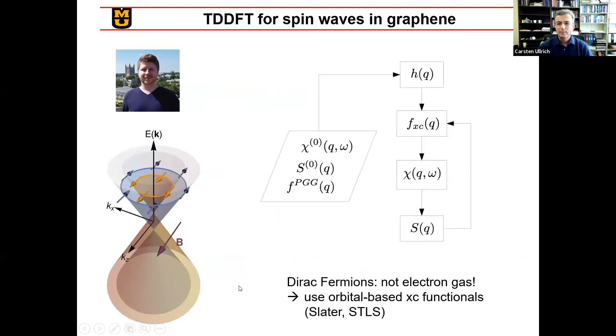And Matt's particular problem was to look at many-body effects. And since Dirac fermions are not an electron gas, you need different types of functionals. So he is using the STLS and Slater method to study spin waves.